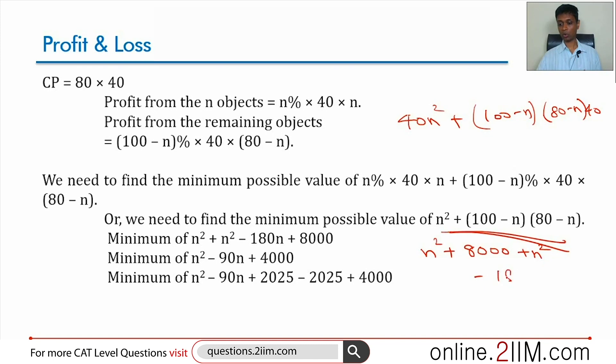We get 2n square minus 180n plus 8000, or n square minus 90n plus 4000.